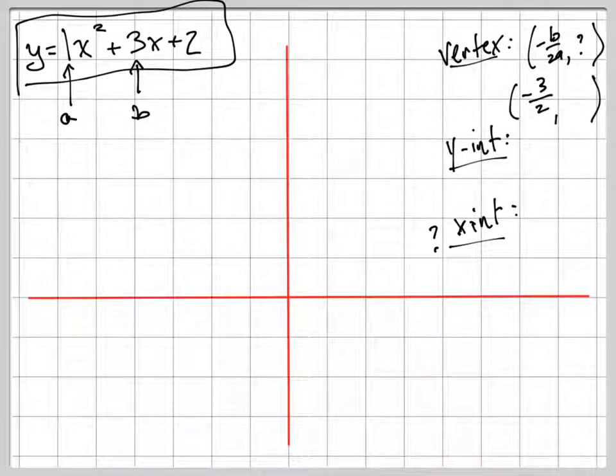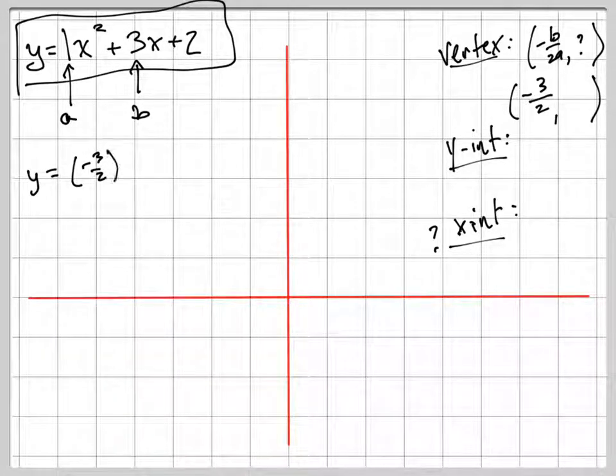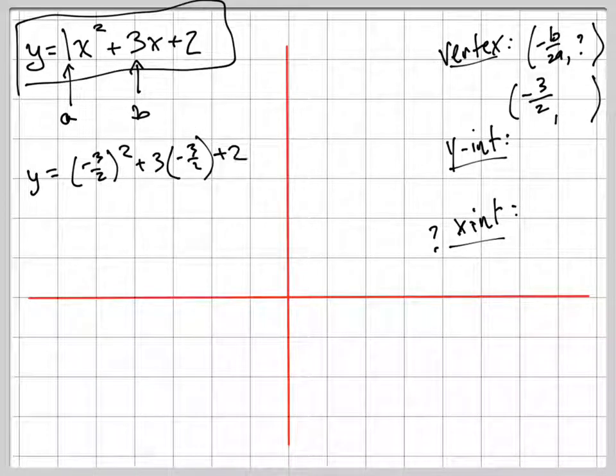What's your y-coordinate of your vertex? That's a little bit harder. What are you going to have to do? You're going to have to plug it in to find out what it is. So now I'm going to write y equals negative 3 halves squared plus 3 times negative 3 halves.